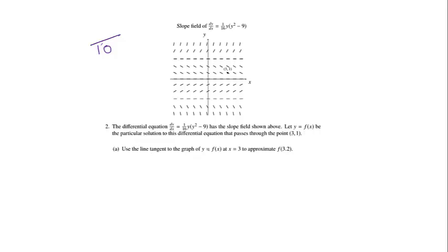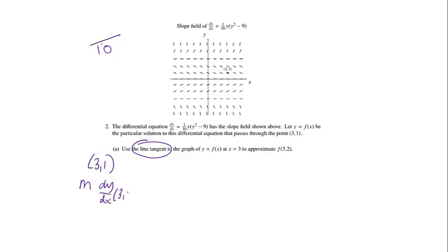It says to use the line tangent to the graph of y equals f of x at x equals 3 to approximate f of 3.2. You can't use the tangent line to approximate if you don't have the tangent line, so that's what this problem is asking for. We have the point already — we have (3, 1) — but to get the slope m, we need to find dy/dx at the point (3, 1).